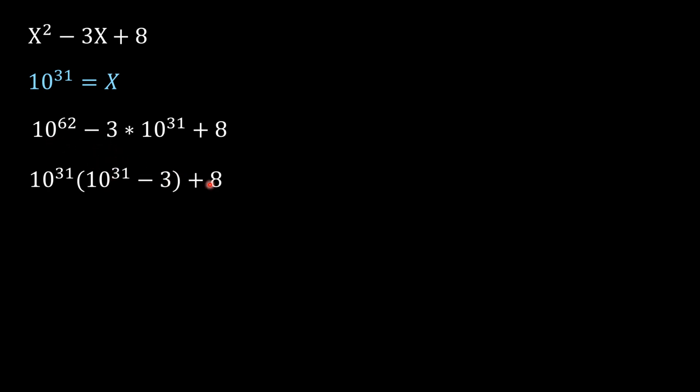So 10 to the power 31 times (10 to the power 31 minus 3) plus 8 remains. If you look at this value within the bracket, it's 31 zeros—1 followed by 31 zeros minus 3. So it will be some integer, and then that integer is multiplied by 10 to the power 31.